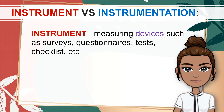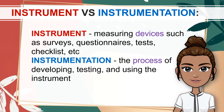In research, an instrument is a general term used by the researcher for measuring devices such as surveys, questionnaires, tests, checklists, etc. On the other hand, instrumentation is the action — the process of developing, testing, and using the instrument. The instrument is the device while instrumentation is a course of action, according to Prieto, Naval, and Carey in 2017. Now let us explore the process of developing a research instrument.